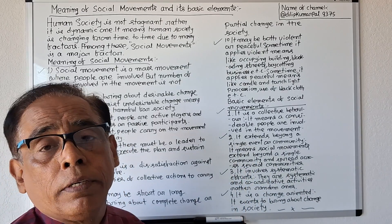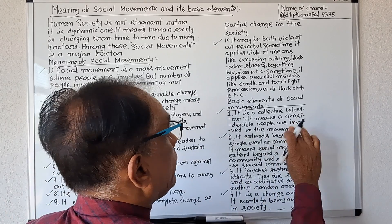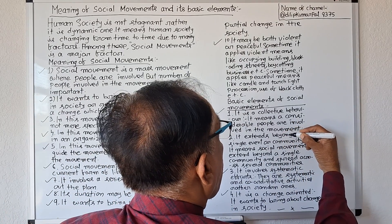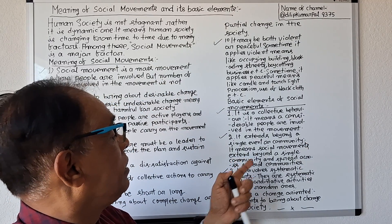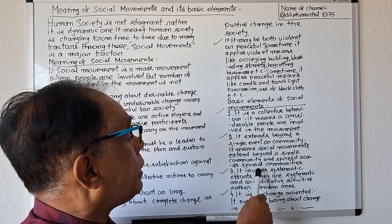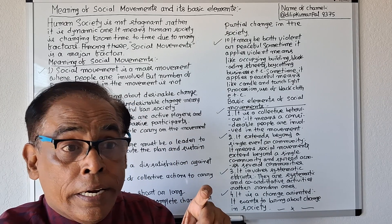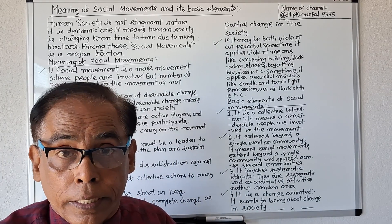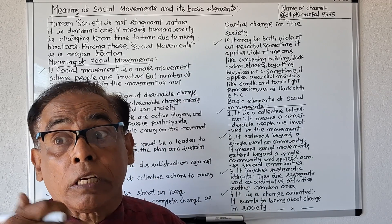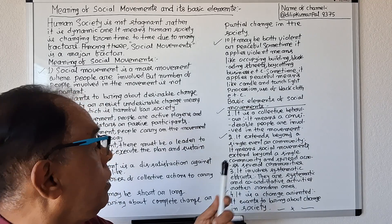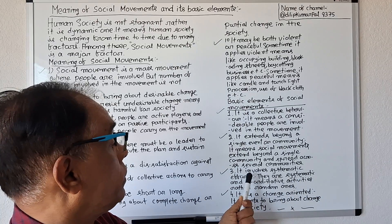Number two: another element of social movement is that it extends beyond a single event or community. Social movements extend beyond a single community and spread across several communities. It is not confined within a single community; rather it spreads across several communities.